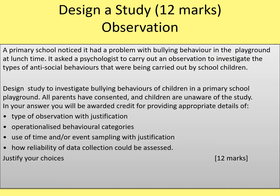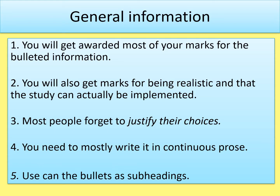In your answer you'll be awarded credit for providing appropriate details of the bullet points: type of observation with justification, operationalised behavioural categories, use of time and/or event sampling with justification, and how reliability of data collection could be assessed. Justify your choices — 12 marks. Those bullet points could come up or you might get other bullets; you have to be guided by them because that's where you're going to get the majority of your marks.